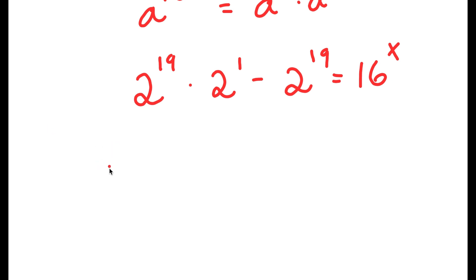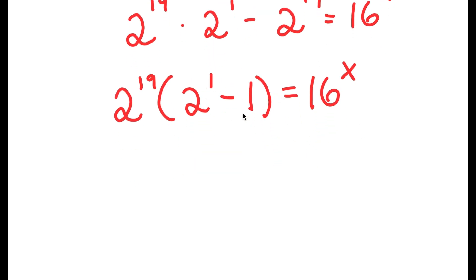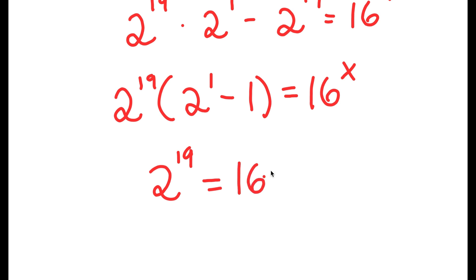If I factor out 2 to the power of 19 from my left-hand side, I get 2 to the power of 19 times 2 to the power of 1 minus 1 is equal to 16 to the power of x. And 2 to the power of 1 minus 1, that's simply equal to 1. And anything times 1 is itself. So I have 2 to the power of 19 is equal to 16 to the power of x.